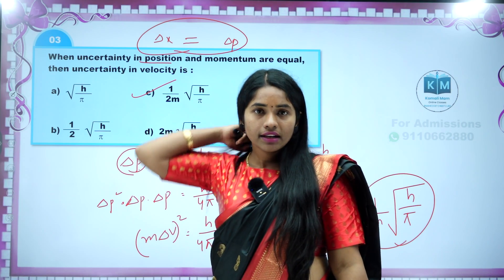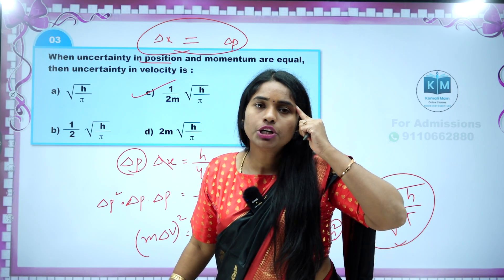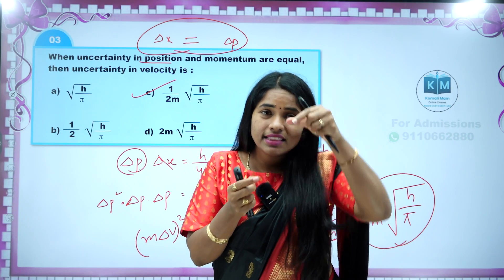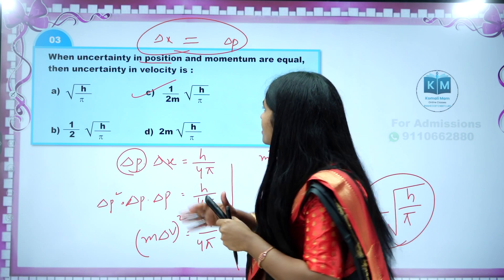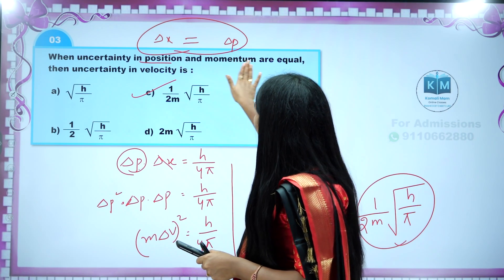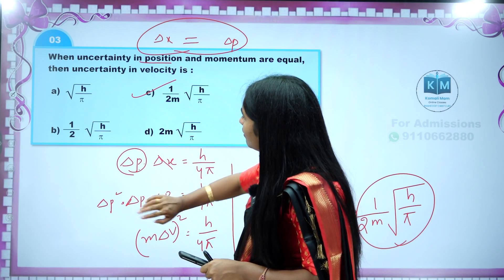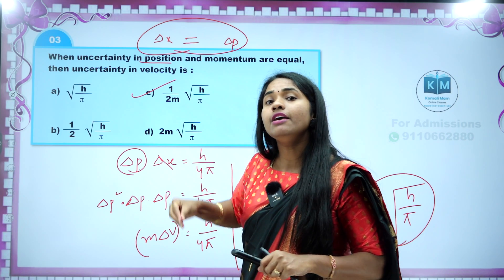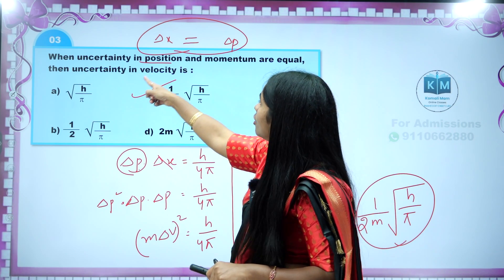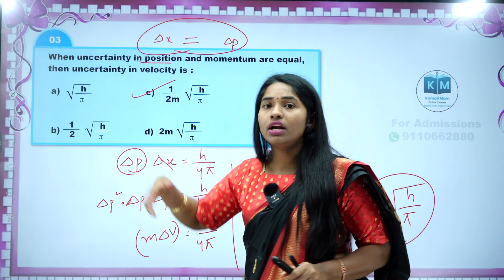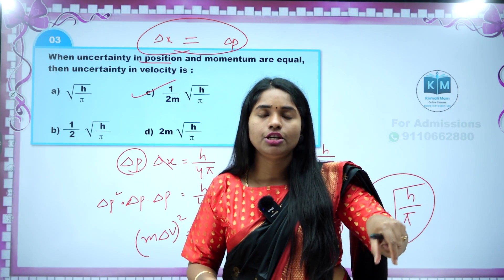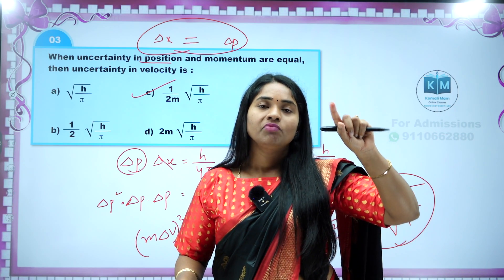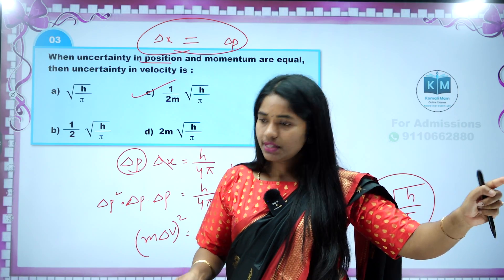Is it clear? Easy! What you should keep in mind: what is equal, and what they are asking in the question — that term only you should keep. Here they are asking velocity, and velocity is there in P, so you keep delta P and remove delta x. If instead they are asking position — the uncertainty in position — then you remove momentum and substitute delta x in place of delta P.